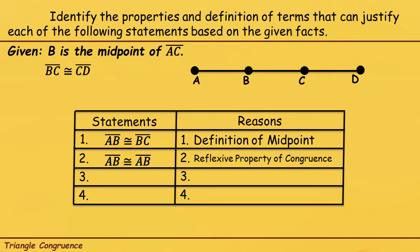Statement number 3 is: line segment CD is congruent to line segment BC. Tignan natin yun sa ating given figure — line segment CD nasa may bandang dulo, at line segment BC yung segment na nasa gitna. Kung bakit sila naging congruent — una, binanggit yan sa given, so pwede natin ilagay sa reason is given. Also, that is the symmetric property of congruence, which is nasa ating properties of congruence.